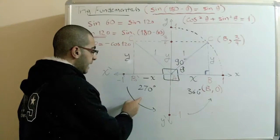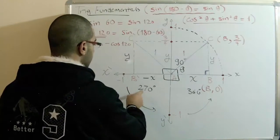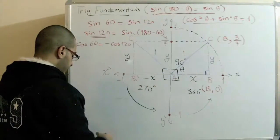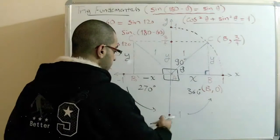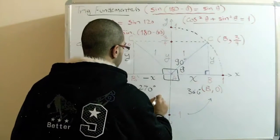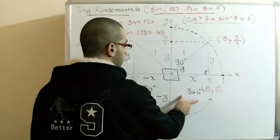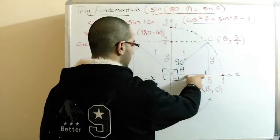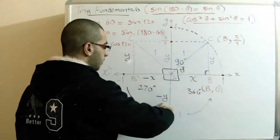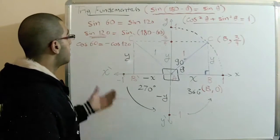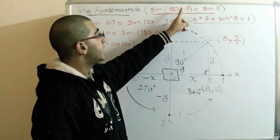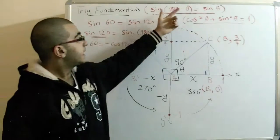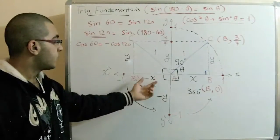In the third quadrant, where the angle is between 180 and 270 degrees, both the x and y coordinates are negative, so the sine value becomes negative y. In the fourth quadrant, the x-coordinate is positive while the y-coordinate is negative. To summarize: sine of (180 minus theta) equals sine theta, and cosine of (180 minus theta) equals negative cosine theta, as we have now proved.